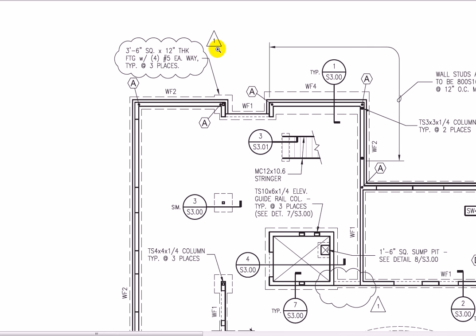Let's talk a little bit about lines on a foundation plan. When we have a dashed line, that indicates something that's beyond or hidden — like underneath the grade. So this line here is indicating the edge. These two lines are indicating the edge of the footing. You can see we have a square here: three foot six square by twelve inch thick footing, with four number five bars each way, typical of three places. So the engineer is getting a little lazy here — he pointed to one and says there's three of them. So I got to go look somewhere else in the drawing.